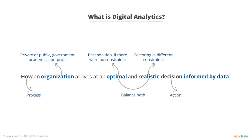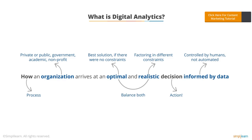'Informed decision' implies action. And 'informed by data' implies that we still leave room for the human brain to make a decision, to leverage their own expertise, experience, and other elements that come into play. That's why we say 'informed' — it's not automatically done with the data. Later on, we'll talk about automation, but at the beginning, there's still an informed decision to initiate it.